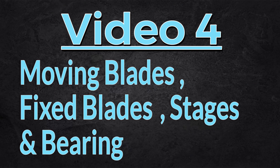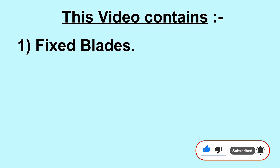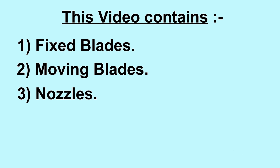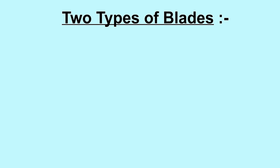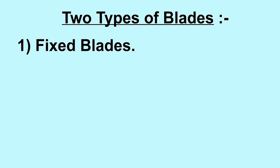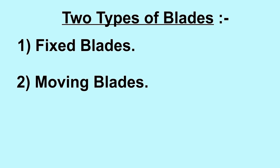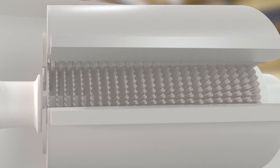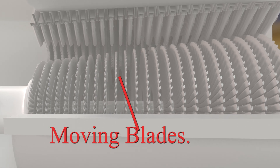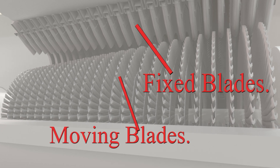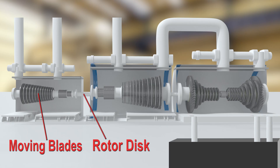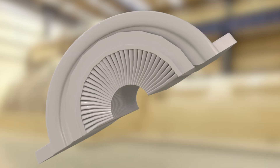In this video we will understand fixed blades, moving blades, nozzles, various bearings, coupling, and more. Turbines have two stacks of blades: one set of moving blades and one set of fixed blades. Moving blades are attached to the rotor disc, and fixed blades are attached to the inner side of the casing.